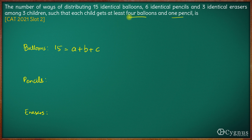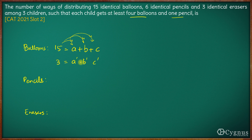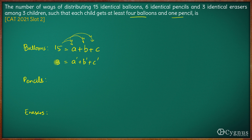Now the condition is each child has to get at least 4 balloons. So if you distribute 4 balloons to each child minimum, we will have 3 remaining balloons — 15 minus 12 equals 3. And let us say out of these 3 balloons each child gets A dash, B dash and C dash balloons. Now there is no restriction on these 3 balloons; they can be distributed in any fashion, whether a child may or may not receive a balloon.